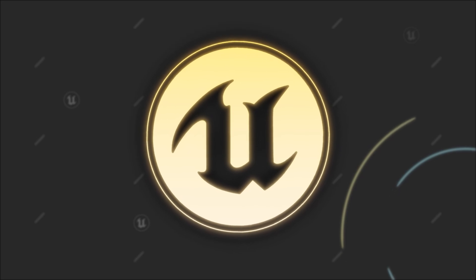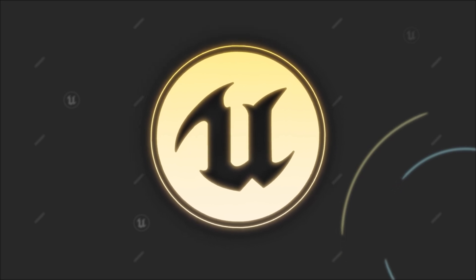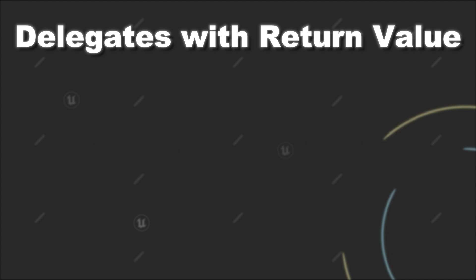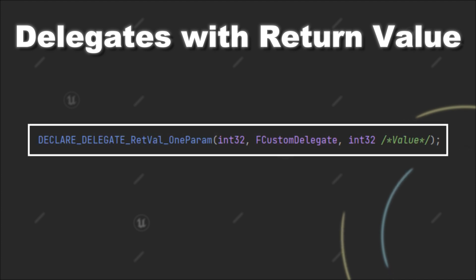When using delegates in Unreal Engine, you might sometimes encounter the case that you want to use a return value from the function that gets called by the delegate. In that case, you have to consider a few things during the setup of the delegate itself.